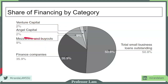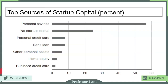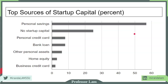Mezzanine and buyout financing is the stage right before a company either goes public or is sold to another business. When a business is just starting — at the seed stage — personal savings accounts for the majority of startup capital. Some businesses start on a credit card. By and large, personal savings and friends and family are the main sources for seed stage capital.